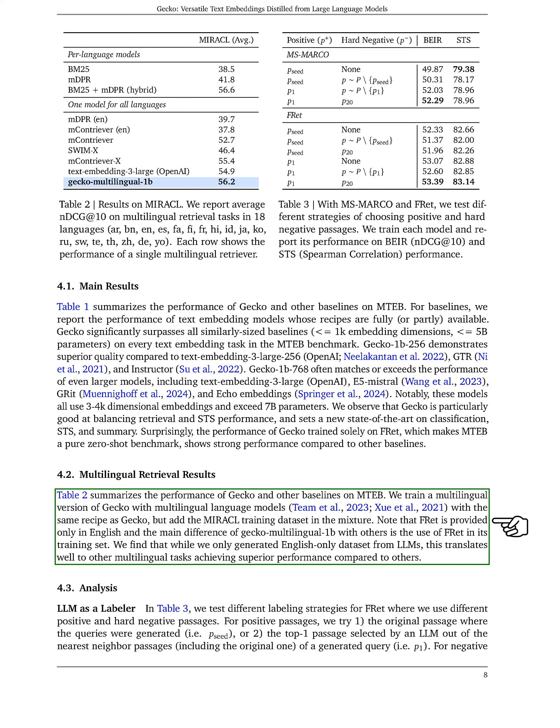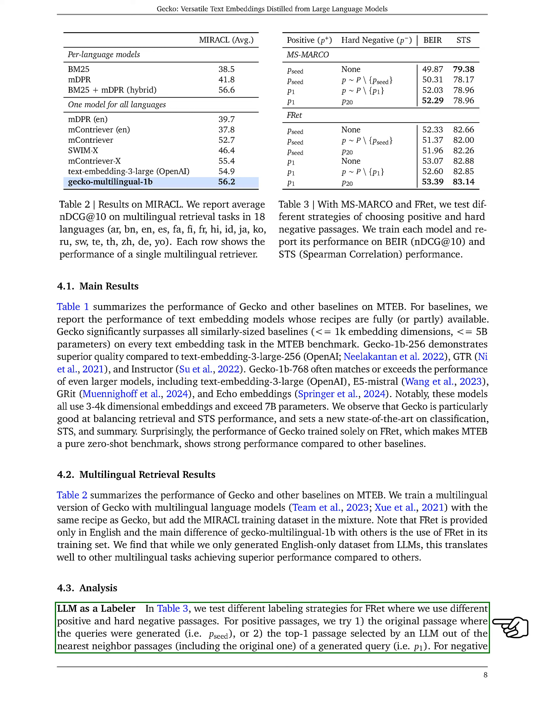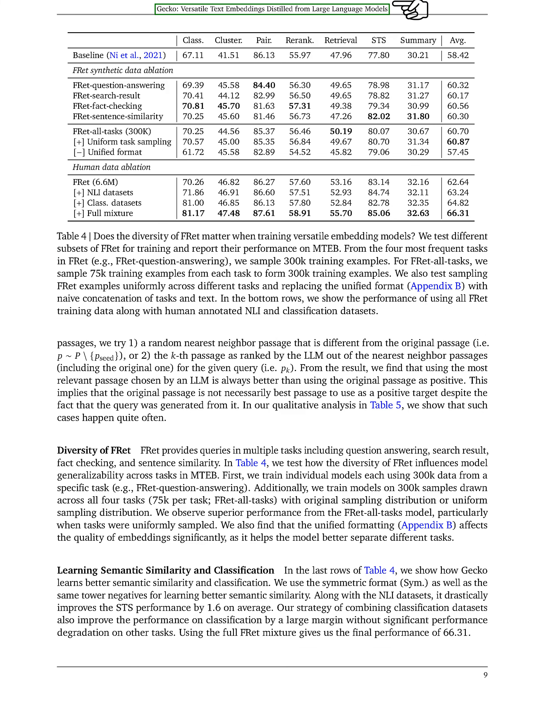In the multilingual retrieval results, we train a multilingual version of Gecko using multilingual language models and the MIRACL training dataset. Despite FRET being available only in English, Gecko's multilingual version achieves superior performance on multilingual tasks compared to other models. In the LLM as a labeler experiment, we test different labeling strategies for FRET using positive and hard negative passages. We find that using the most relevant passage chosen by an LLM is more effective than using the original passage as a positive target, suggesting the original passage may not always be the best choice even if it was used to generate the query.